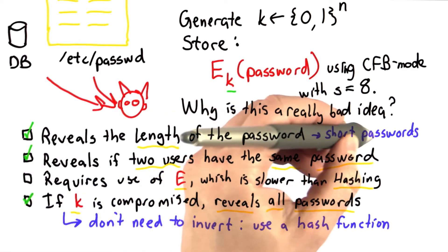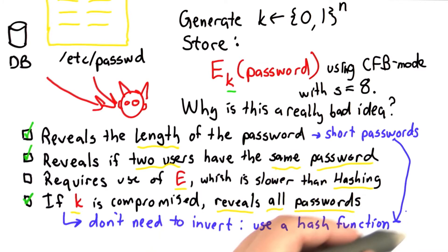The easy way to fix this is to use a hash function as well. If we use a hash function, the size of the output doesn't depend on the size of the input. So no matter how long the password is, we'll have the same number of output bits based on our hash function.